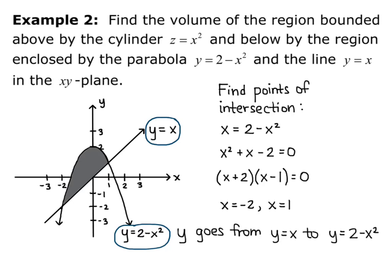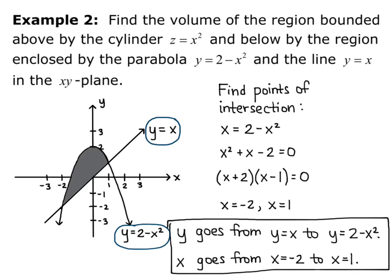And then for x, I want that to be my outer integral, so it has to have constant bounds. And so what I'm going to do is just take the x values that we found, and x goes from x equals negative 2 to x equals 1.